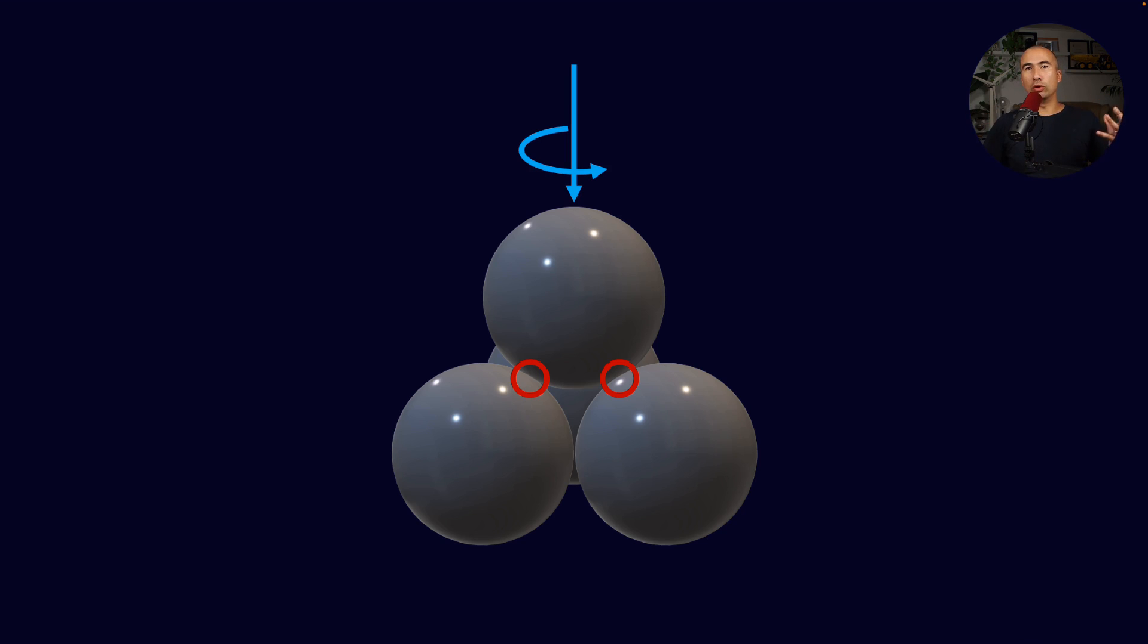So remember, if we had no lubricant and we put a force on that top ball and we just spun it as fast as possible, then what we would get is a welding between all the balls.